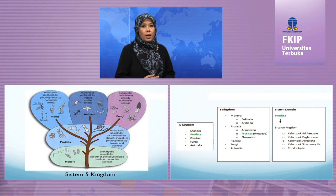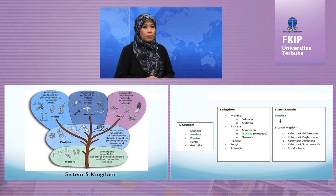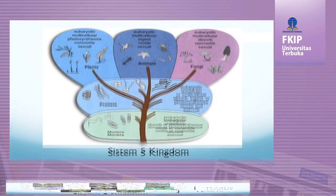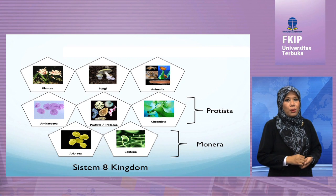Sistem 5 kingdom mengklasifikasikan semua organisme uniseluler menjadi satu kingdom, yaitu protista. Sementara itu, dalam sistem 8 kingdom, terdapat perluasan pada kingdom monera dan protista. Dasar dari sistem 8 kingdom adalah bahwa sistem 5 kingdom dianggap sudah kuno, dan kingdom protista bersifat polifiletik atau memiliki lebih dari dua nenek moyang. Sistem 8 kingdom juga memperkenalkan pemecahan kingdom protista menjadi tiga kingdom baru, yaitu Archaeozoa, protista, dan kromista.